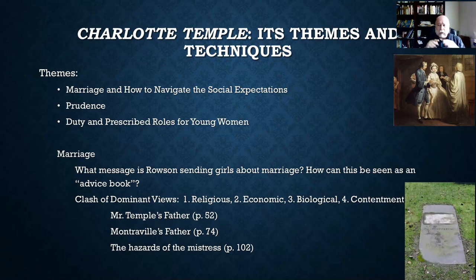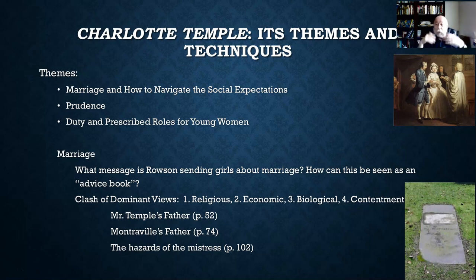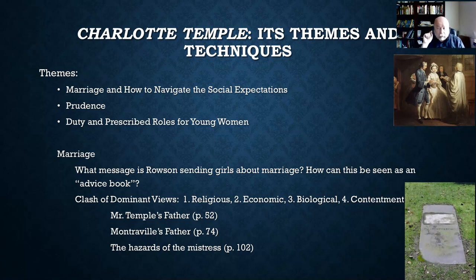There's a clash being painted here — a religious clash, economic views, biological views. We're all attracted to other people. There's a clash on views about what constitutes contentment and happiness in life. You saw Mr. Temple's father who had this horrible view of marriage — just go marry somebody who's got a lot of money. And Montreville's father has the same view: don't you marry a poor girl, I'll cut you off. There's this wonderful, sad passage where the narrator addresses the reader directly in an attempt to gain sympathy.